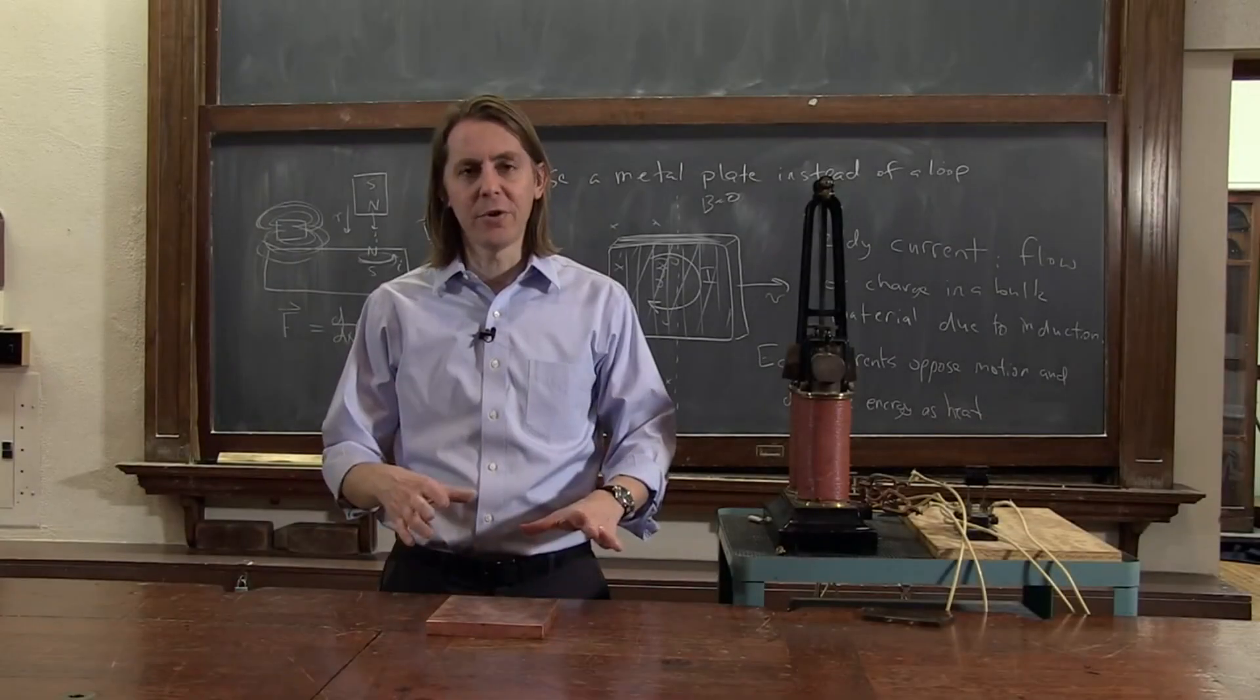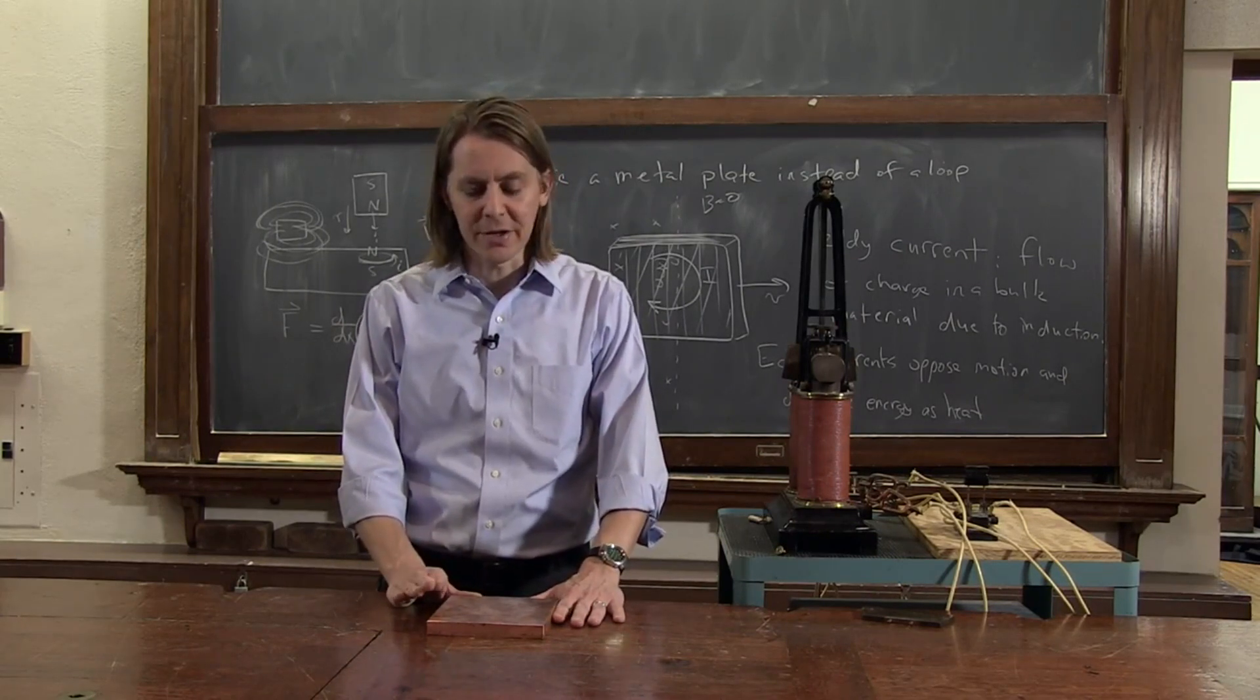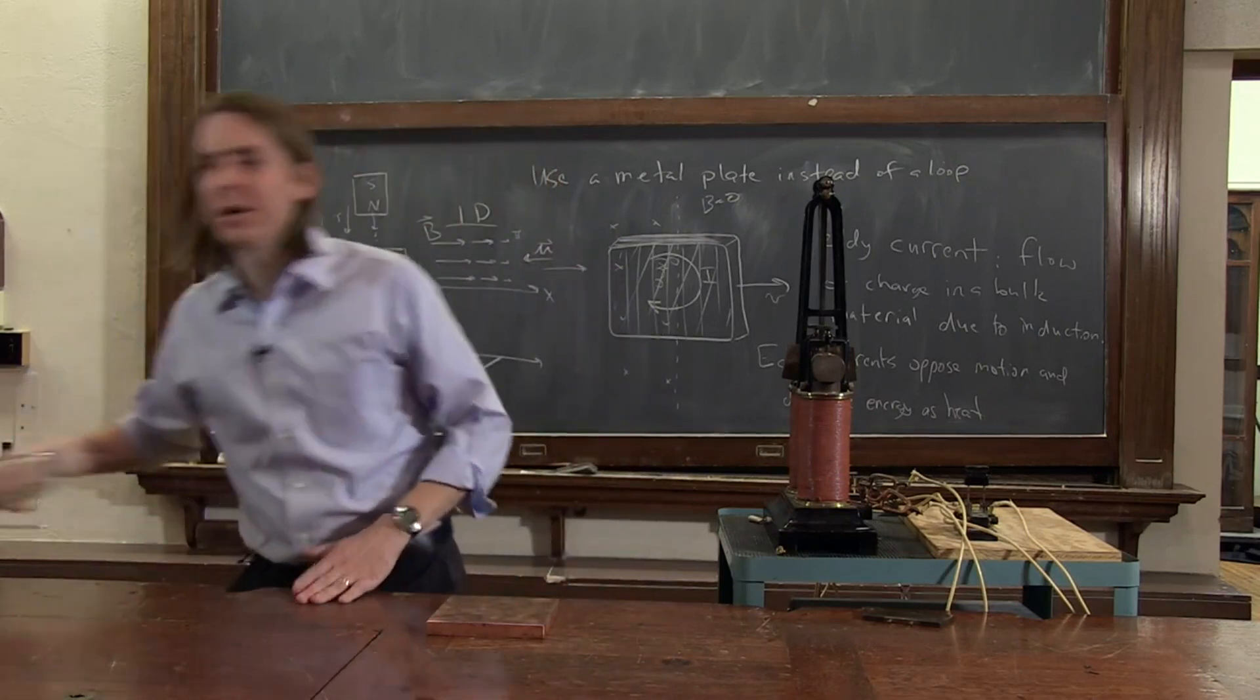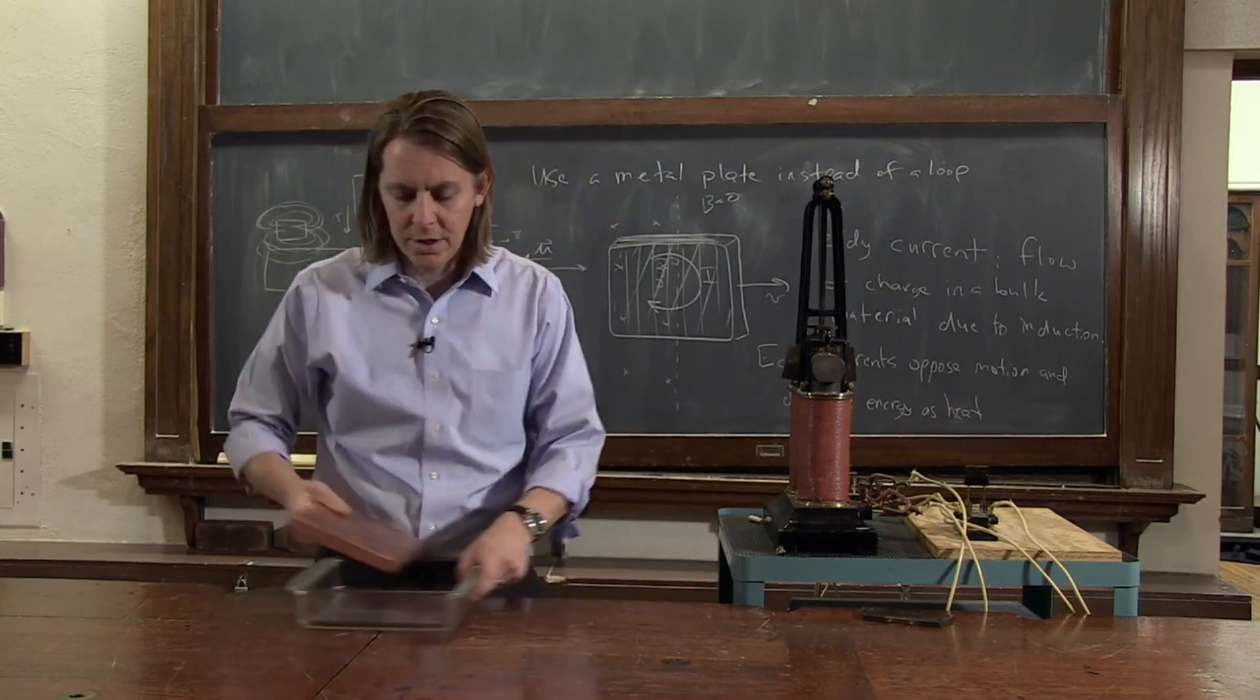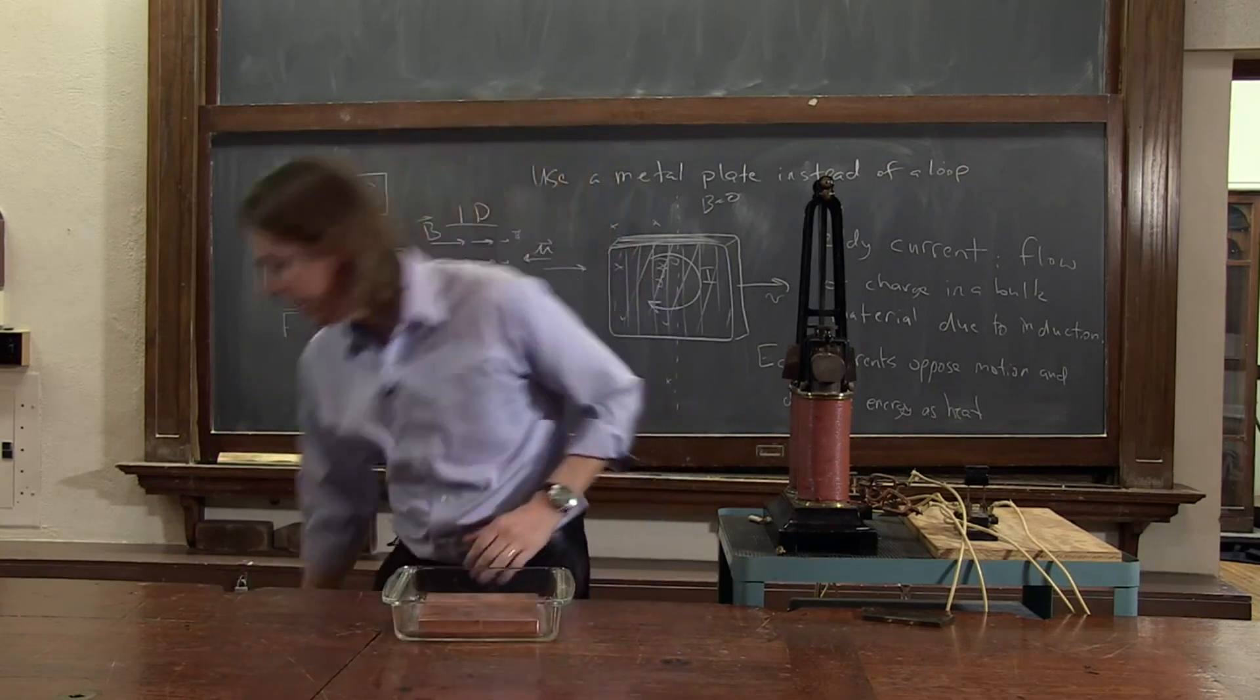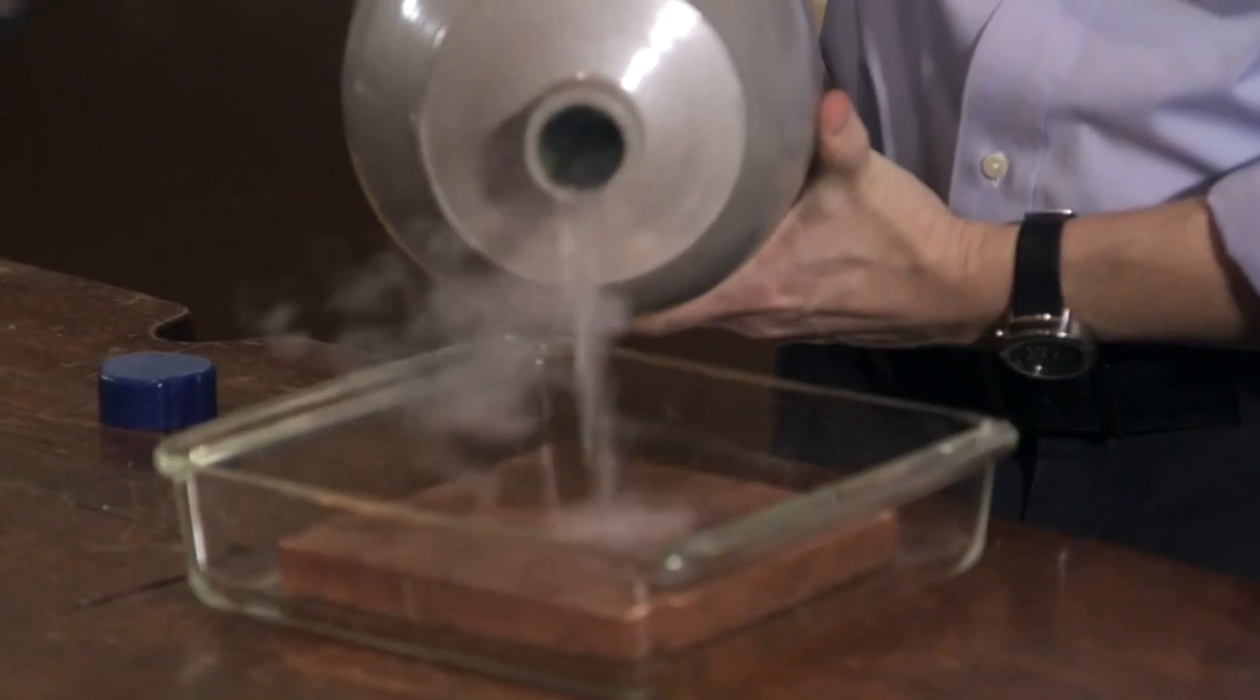So since eddy currents depend on the material's resistivity, if we can change the resistivity, we might change the effect. So what we're going to do is take our copper block and freeze it to greatly reduce its resistivity. So here I'm going to put it in this Pyrex dish and we'll pour liquid nitrogen over it and let it cool off.